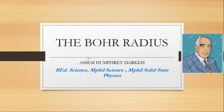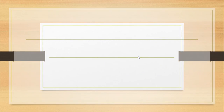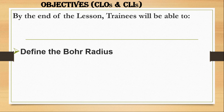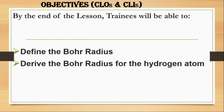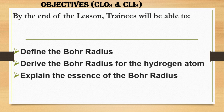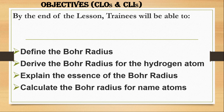This morning, the interest is to look at the Bohr radius of the hydrogen atom, and our lesson will be guided by the following objectives. By the end of our lesson, you will be able to: one, define the Bohr radius; secondly, derive the Bohr radius for the hydrogen atom — this involves a little bit of calculation; and also explain the essence of the Bohr radius and look at some calculations involving the Bohr radius for named atoms or ions.